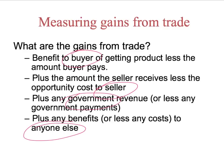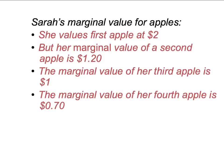We've concentrated so far on the gains from trade to the buyer, and that's got two bits: it's the benefit that the buyer gets from a product, less the amount the buyer pays. In our last presentation, we looked at how to work out the total value to a buyer from different quantities of a product. We've been looking at a consumer called Sarah and her marginal value for apples.